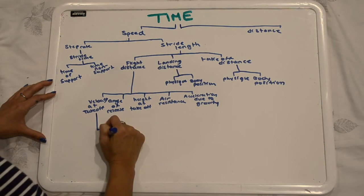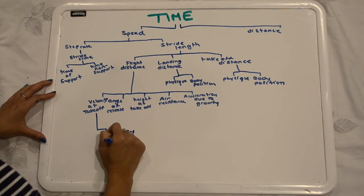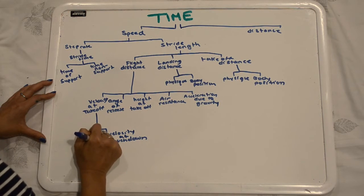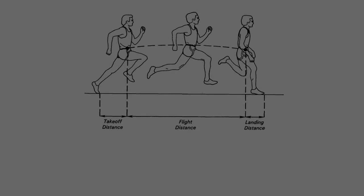We know that velocity at takeoff is related to change in momentum of the athlete, so we can break the takeoff velocity into velocity at touchdown and change in velocity. We can break this down even further because we know that change in velocity is related to the impulse of the athlete.